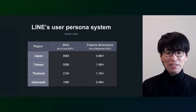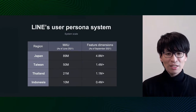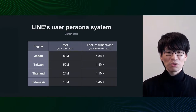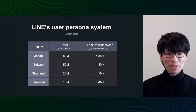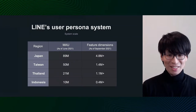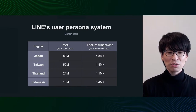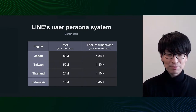Here is a table showing the scale of the user persona system in terms of number of target users and scale of data. For example, in Japan, the number of monthly active users is approximately 89 million, and the number of dimensions of feature data used for machine learning is more than 4.8 million, making it a very large system.